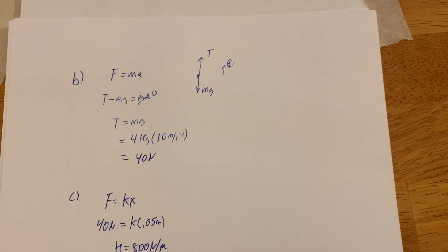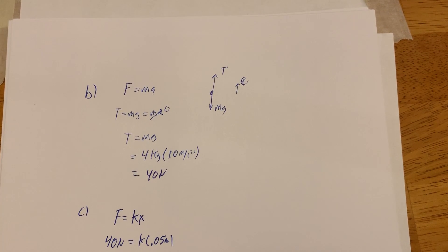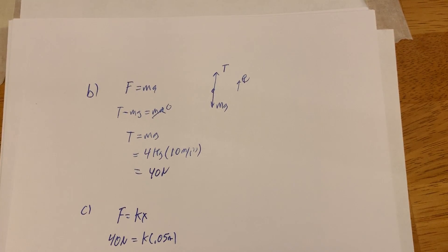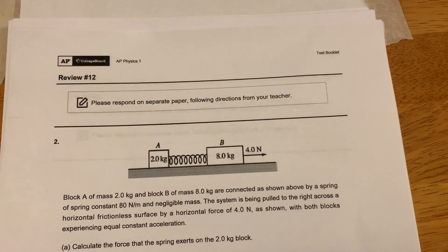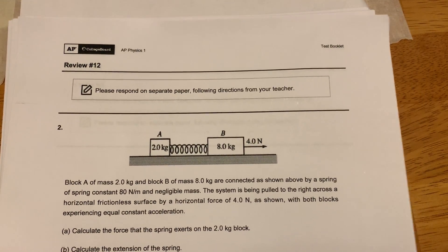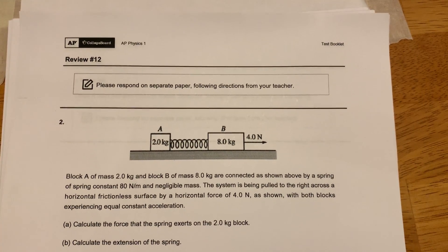So that is Review 12, problem 1 solved — pretty easy going, no surprises. Now let's take a look at 12-2. Two masses A and B connected by a spring, with a 4 Newton force going to the right, being pulled across a horizontal surface, experiencing constant acceleration.